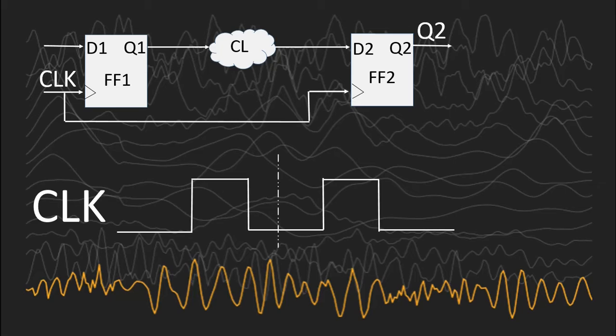The flip-flop to flip-flop path is called the critical path — the one having the maximum amount of combinational logic path delay. So let us assume that the path you are seeing on your screen is a critical path. We will now try to understand how to calculate the maximum operating frequency of this path, which ultimately will become the maximum operating frequency of the complete complex design.